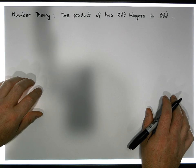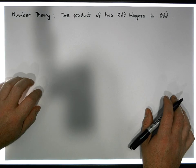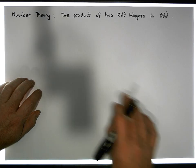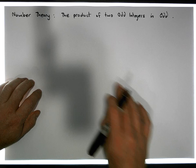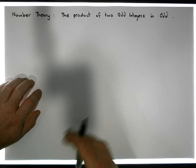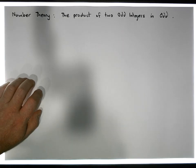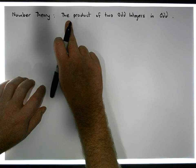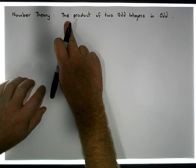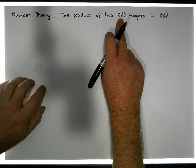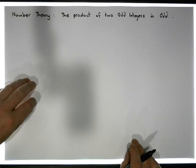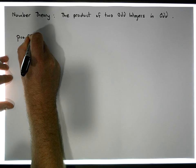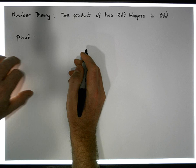Hi guys, this is Jonathan Lambert with the Mathematics Development and Support Service at the National College of Ireland. This video is another in our series on number theory, dealing with divisibility of the integers. In this proof, we're going to show that the product of two odd integers is in fact odd.